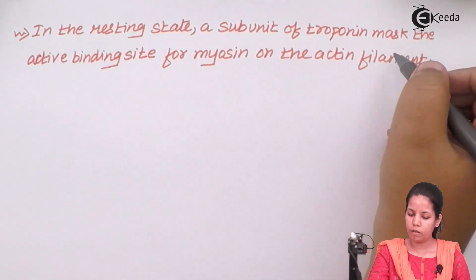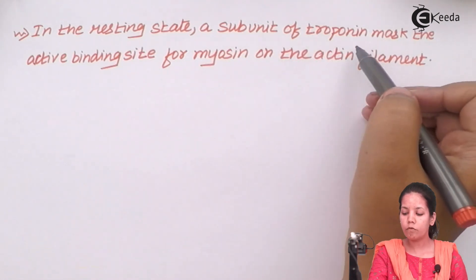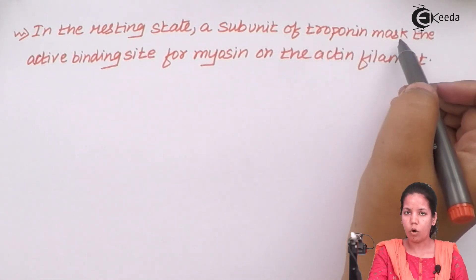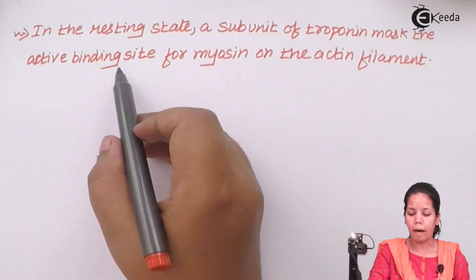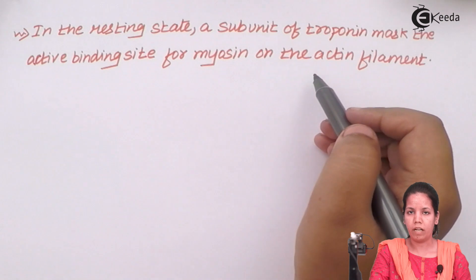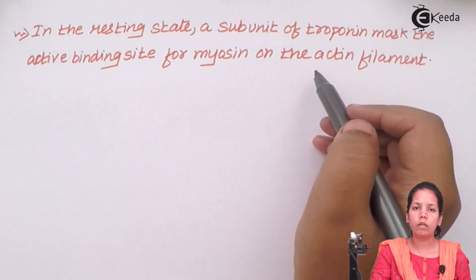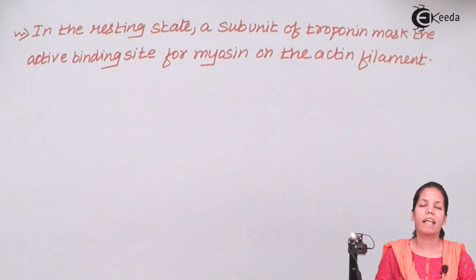In the resting state, a subunit of troponin masks or covers the active binding site for myosin on the actin filament. When this site becomes available for myosin, the sliding filament theory — the movement of light and dark bands, and contraction and relaxation in muscle contraction — can happen.